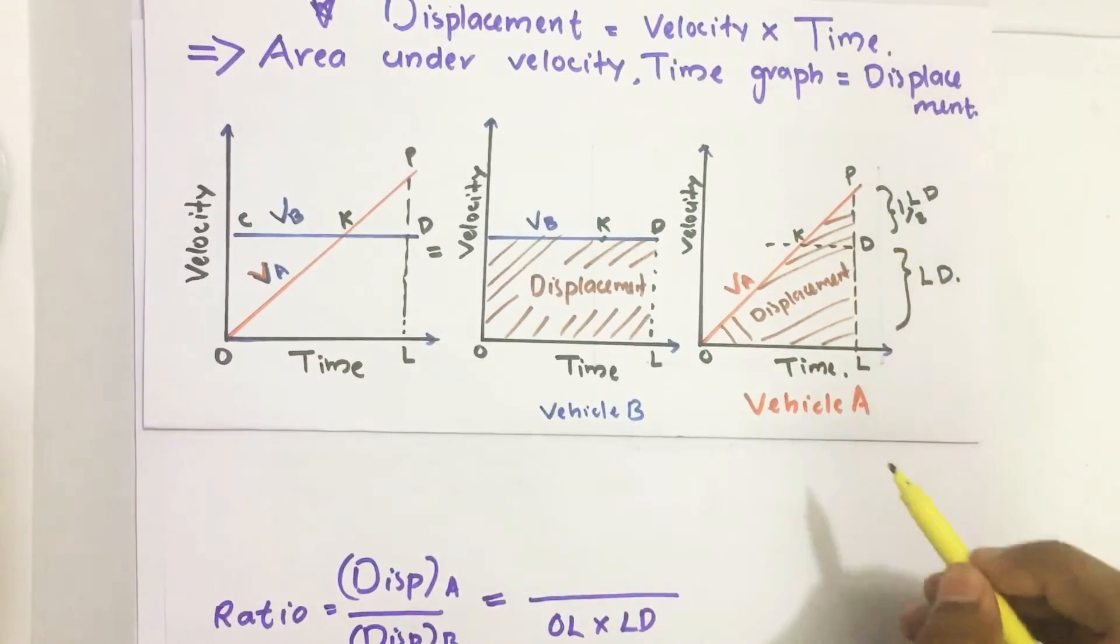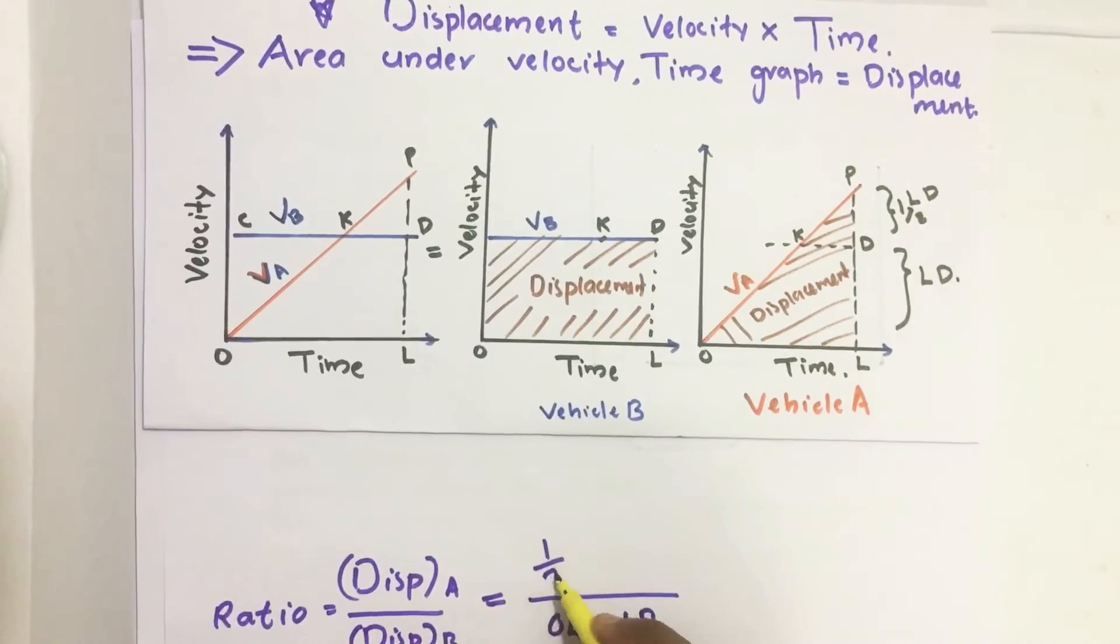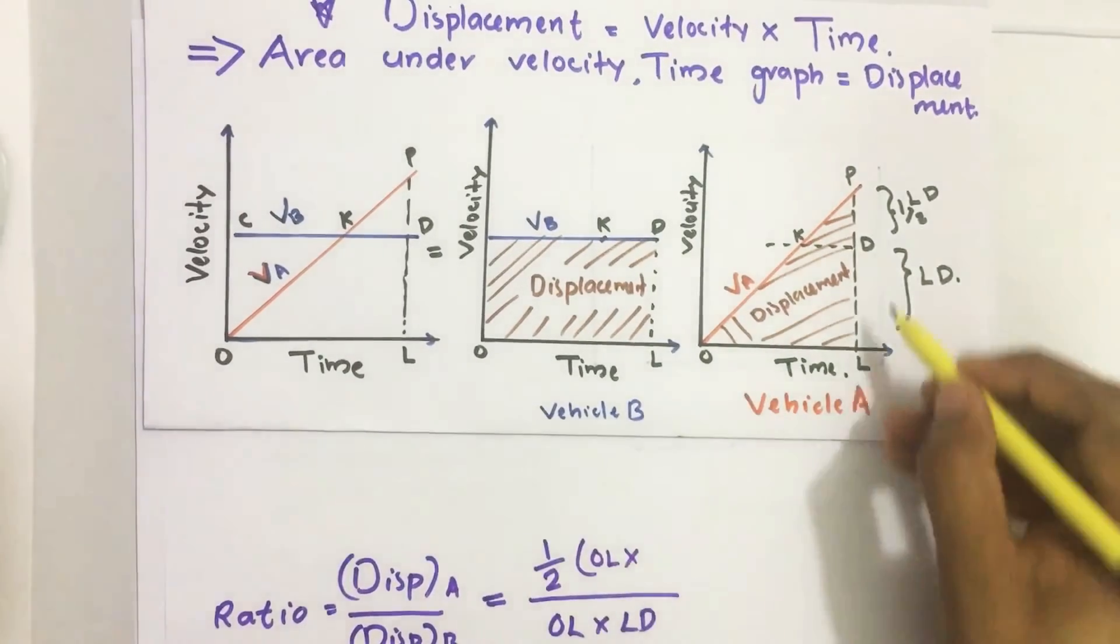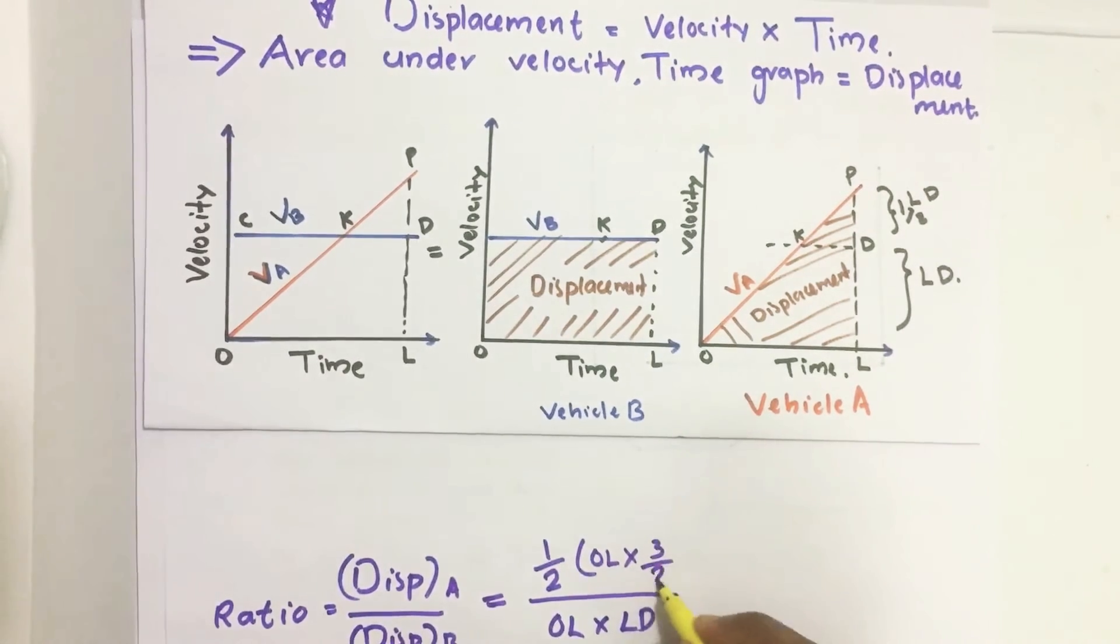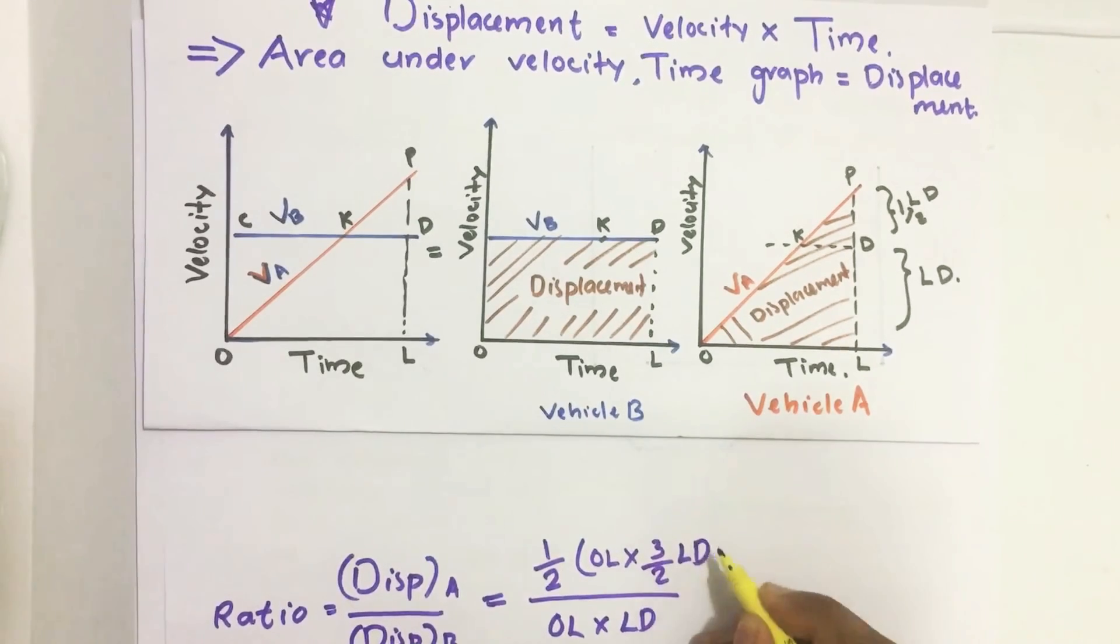We know how to find area of a triangle - half into this base distance OL into this height. It is LD plus half LD, which gives us 3 by 2 LD.